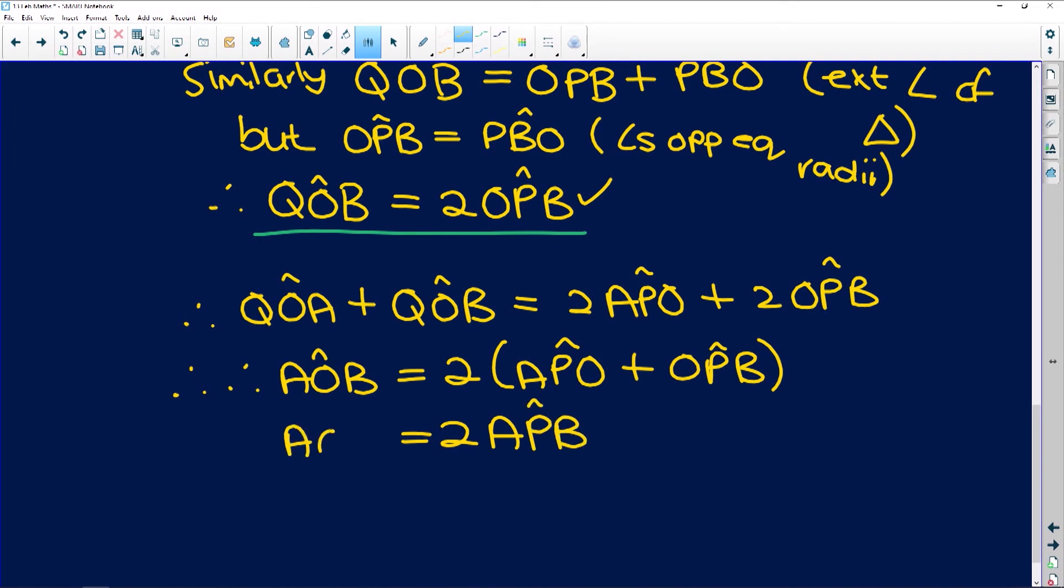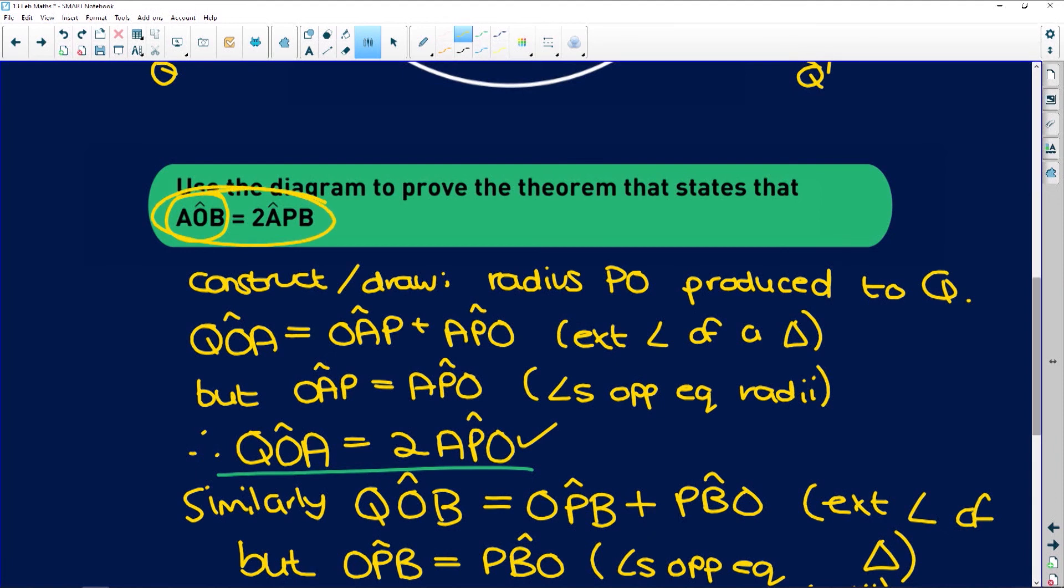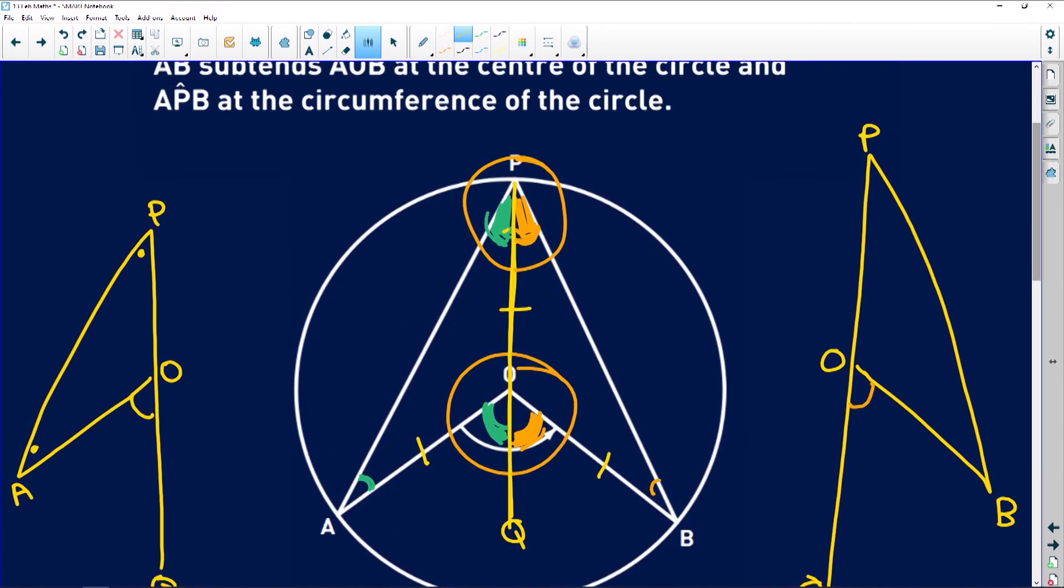That is exactly what we're required to prove. AOB is equal to twice APB. So remember guys, the first thing you need to do is draw in this extended radius. The moment you do that, you split angles and you're allowed to start working with them. And you establish isosceles triangles that help you with those base angles. So guys, with your proofs, remember there will always be a construction when you have to prove that line parallel to one side of a triangle divides them in proportion. You know you're going to have to join lines and draw in and use those base area forms.